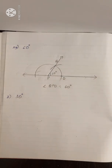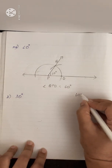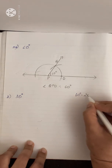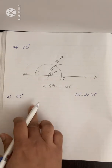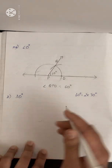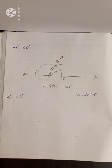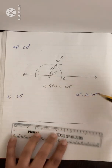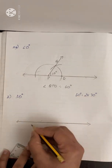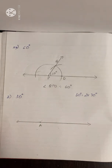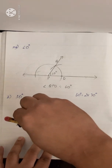Next we have to draw 30 degrees. 30 degrees means half of 60. Since 60 degrees is 2 times 30 degrees, we first construct 60 and then draw the bisector of 60 degrees. So first draw a line and mark a point A. With A as center, draw an arc.